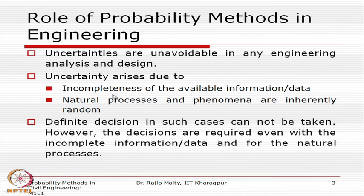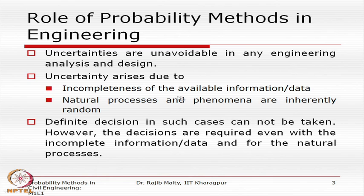The first source of uncertainty that comes to mind is the incompleteness of the available information or data. Whatever sample data or information is available to us is not complete. This is the first source of uncertainty we are supposed to consider, and it is true for any engineering application we can think of.